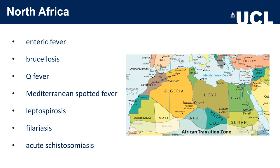North Africa — including countries such as Mauritania, Mali, Algeria, Libya, Egypt, Sudan, Niger and Chad — above the African transition zone will have endemic infections such as enteric fever, brucellosis, Q fever, Mediterranean spotted fever, leptospirosis, filariasis and acute schistosomiasis.